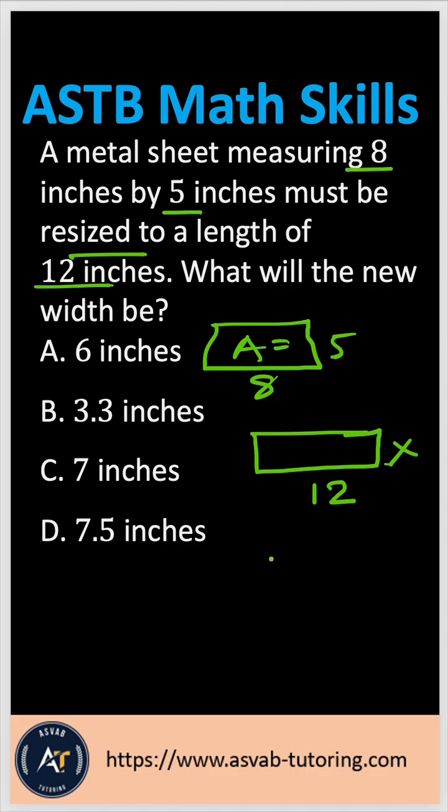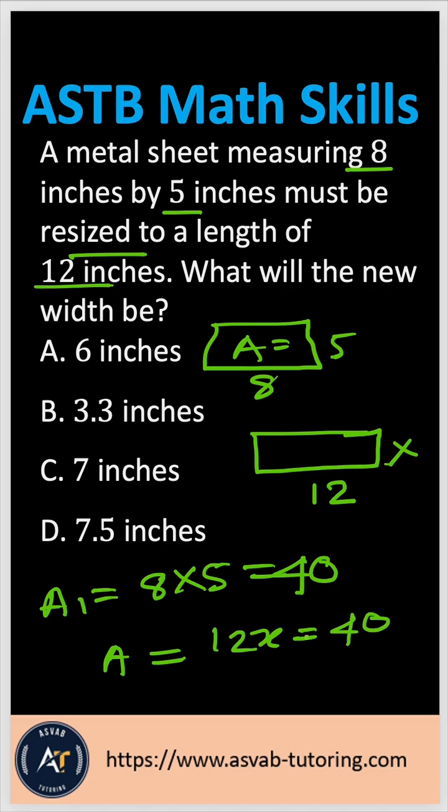So the first area will be A1 equal to 8 times 5, which is 40. Now A2 is same as 40, but its width is different. So that is 12x equal to 40.